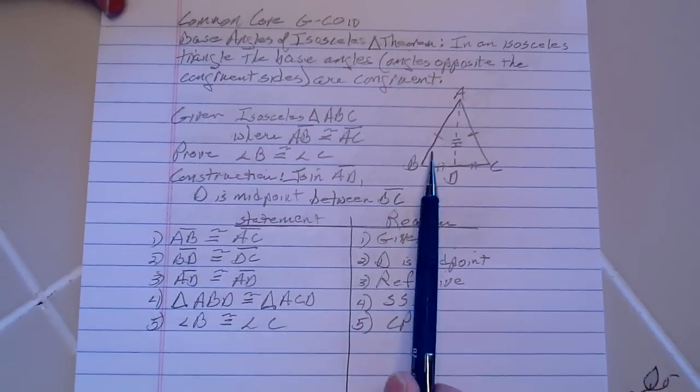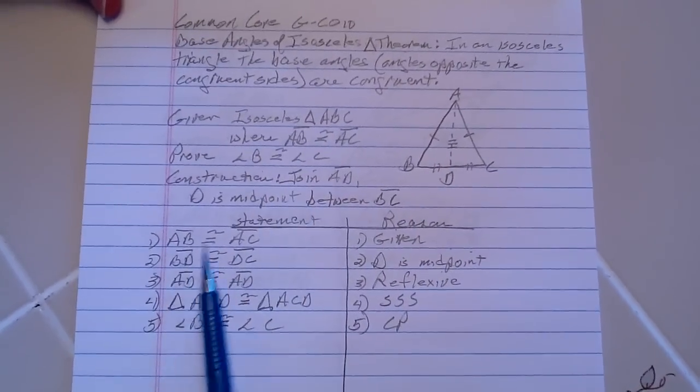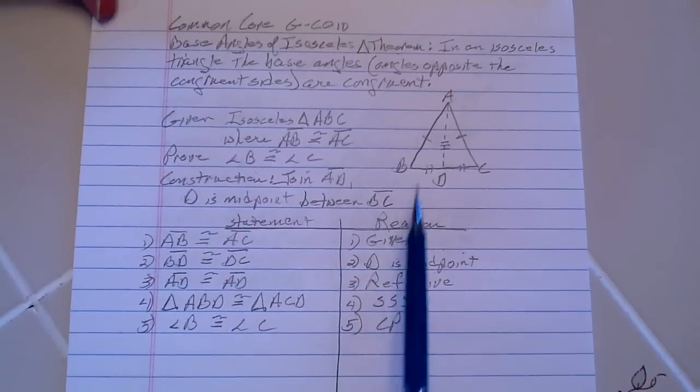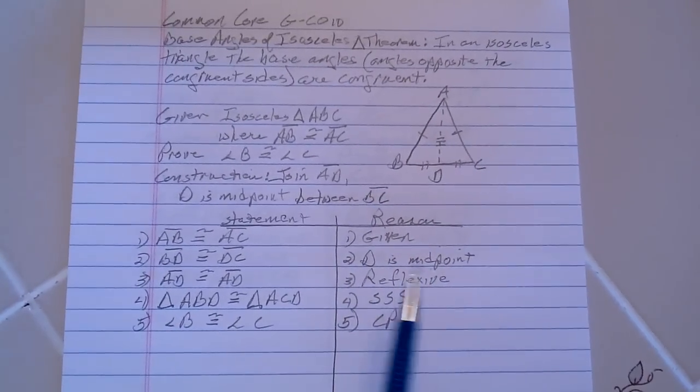We've already given from up here that AB, segment AB, is congruent to segment AC. That's given AB, AC, because it's the isosceles triangle.